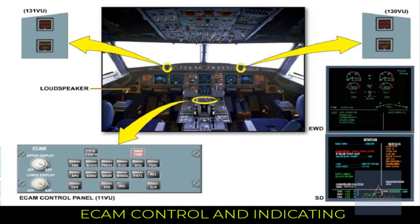EECOM control and indicating. The Engine Warning Display, EWD, is divided into two main parts. The upper area is used to display the main engine parameters, the fuel on board, FOB, and the slat-flap position. The lower area is used for warning, caution, and memo messages.